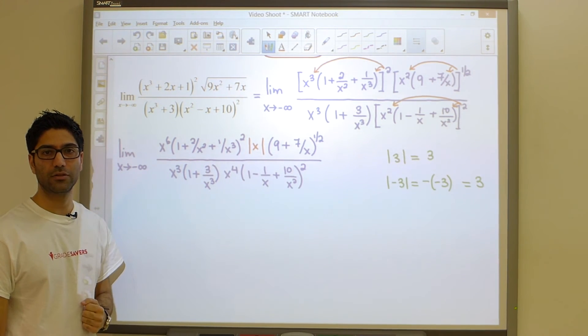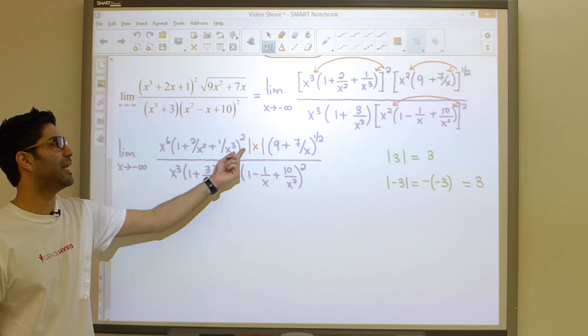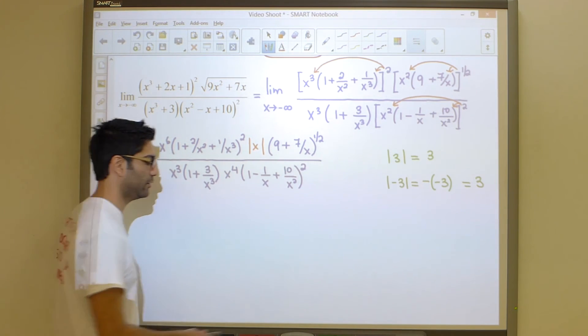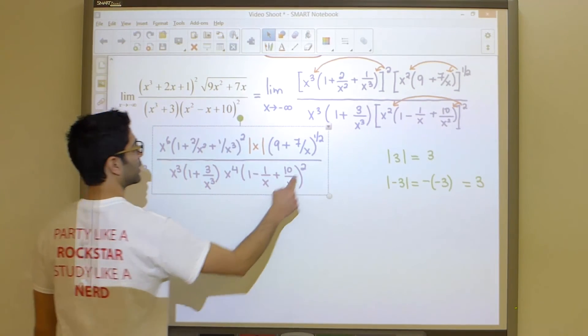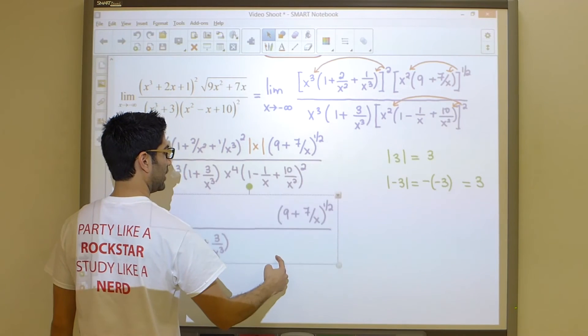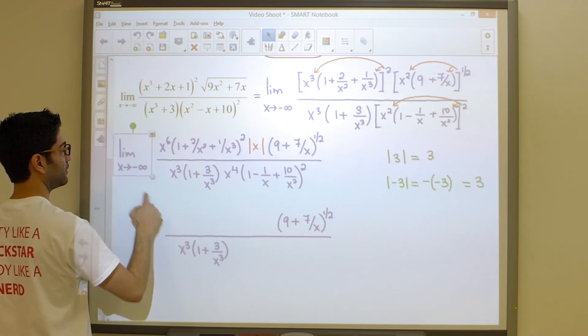Notice where x is going. X is approaching negative infinity. Clearly x is a negative value, which means I can remove the absolute values, but I'll have to slap on a negative sign at some point, at some place. I'll put it up front over here. So let's take a look at how we can get that done.